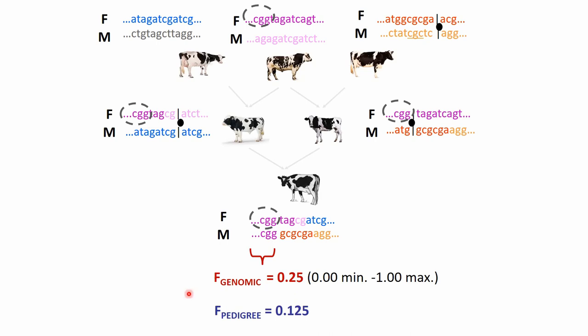This shows the reality that pedigree and genomic inbreeding coefficients can differ. The pedigree inbreeding coefficient is based on probabilities, while the genomic inbreeding coefficient is based on actual observations from the genome. Importantly, to obtain the genomic inbreeding coefficient we don't need any supporting pedigree data — we need only the genotype data from the current individuals, without even knowing anything from previous generations.